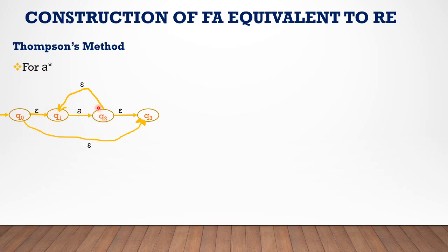A has a backward connection and Q0 has a forward connection. We will study this diagram — the diagram for A star with its forward and backward epsilon transitions.